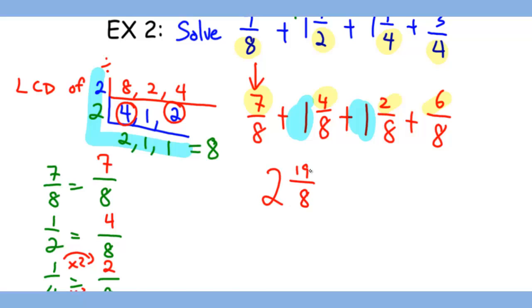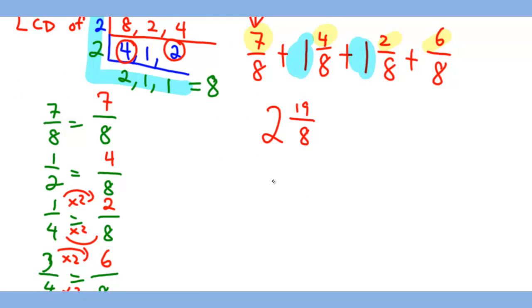Which gives us 2 whole and 19 over 8. Again the denominator stays the same. Now the last step is to convert the improper fraction to a mixed number and then add it back to the whole number.